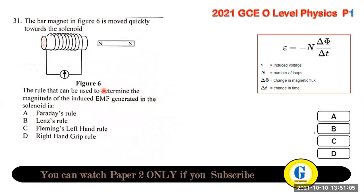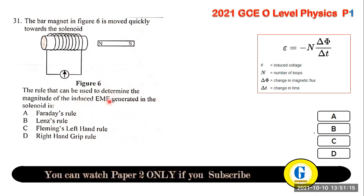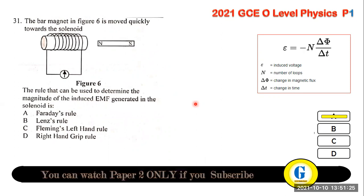Question 31: a bar magnet is moved quickly towards a solenoid. The rule used to determine the magnitude of the induced EMF is Faraday's Law — Faraday's rule determines the induced EMF (induced voltage).